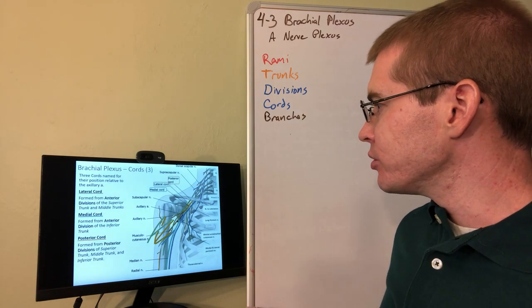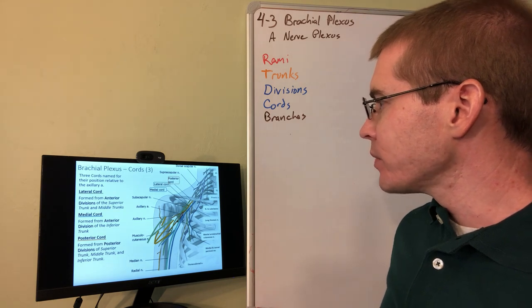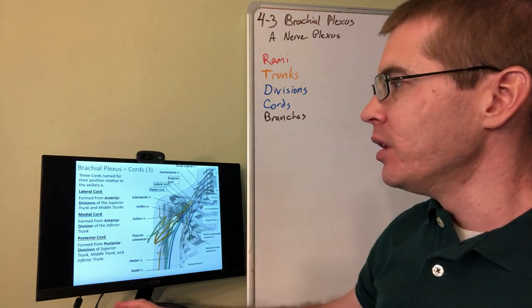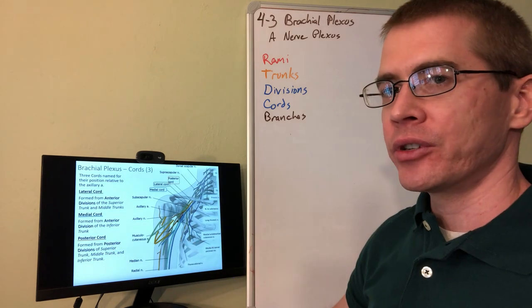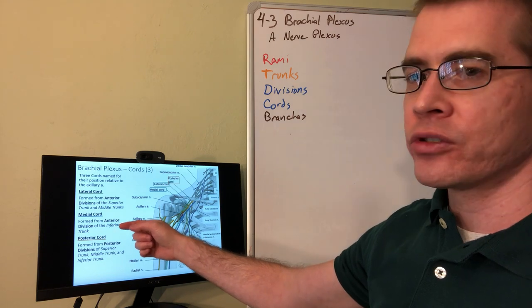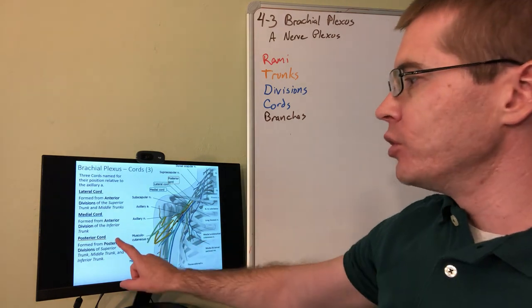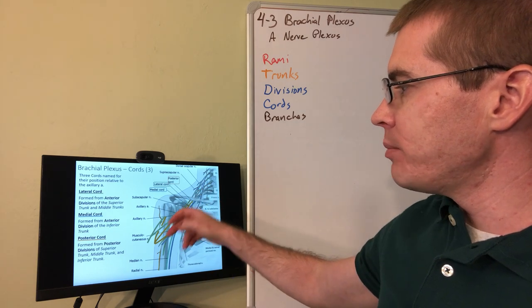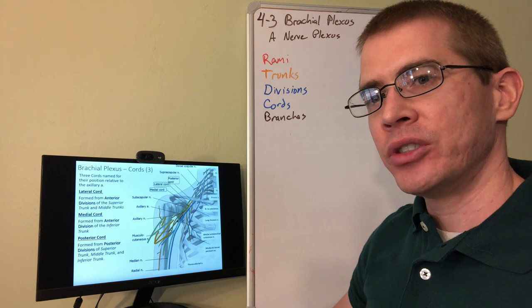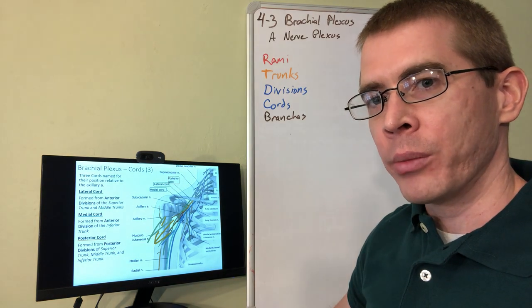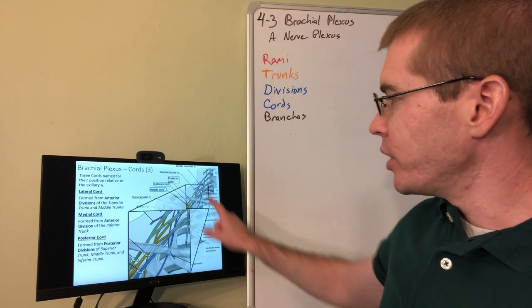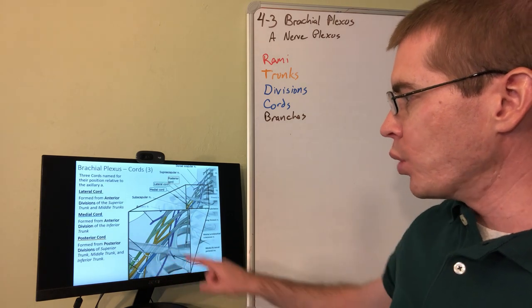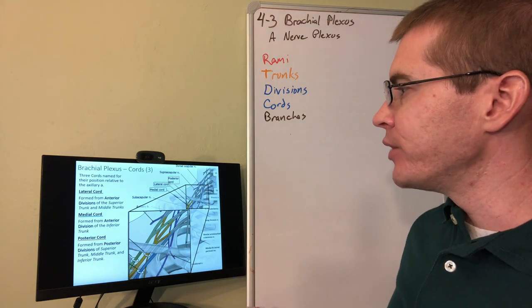Now we are getting to the different cords. The lateral cord is formed from anterior divisions of the superior and middle trunk. The medial cord is formed from anterior divisions of the inferior trunk. So the anterior divisions of the inferior trunk are only going to the medial cord. Posterior cord is formed from the posterior divisions of all three trunks. Posterior cord ends up traveling posterior to form the radial nerve, which innervates the entire posterior side of the arm, forearm, and in fact the hand as well. So here we see a blow up of those cords and the trunks and how they contribute to the individual cords.